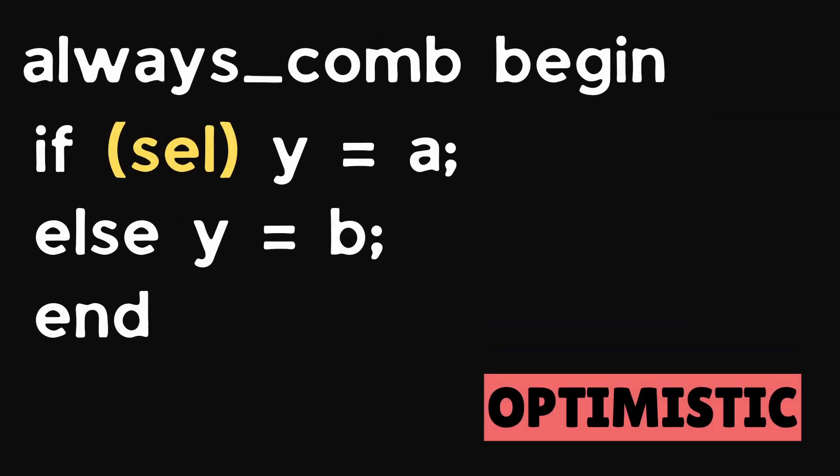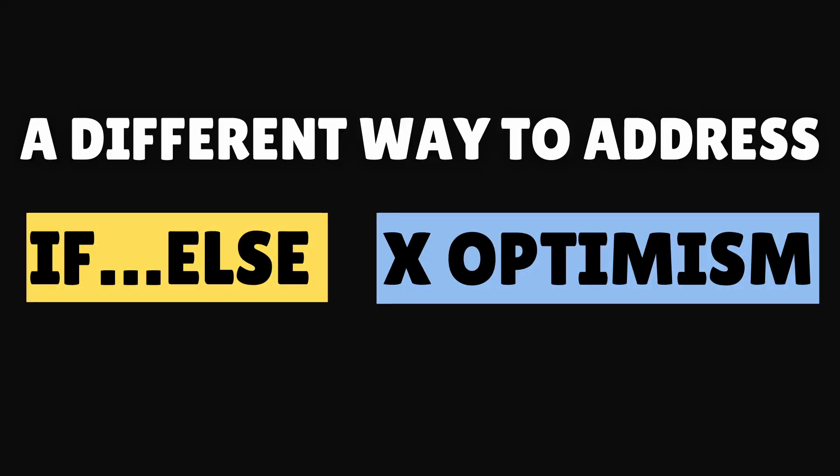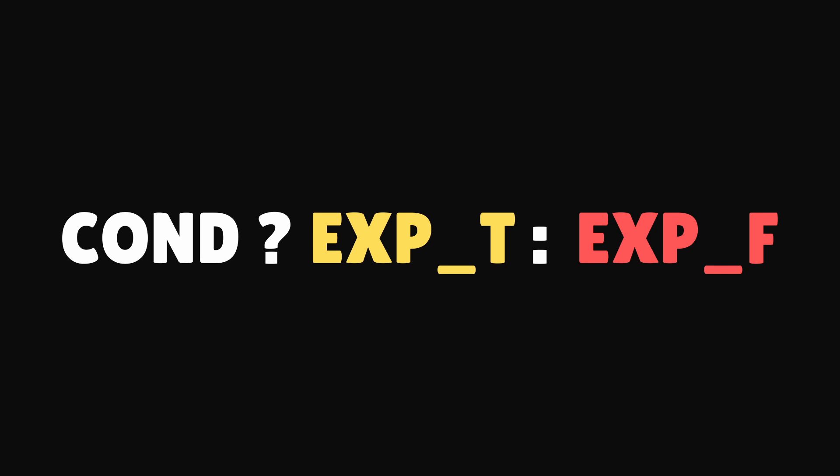Now let's revisit X optimism if-else statement. If select is X, then else branch will be executed. In X pessimism, we have modified if-else statement such that X propagates to the result when select is X. There is also a different way to address this problem of if-else X optimism by using the conditional operator instead of if-else.